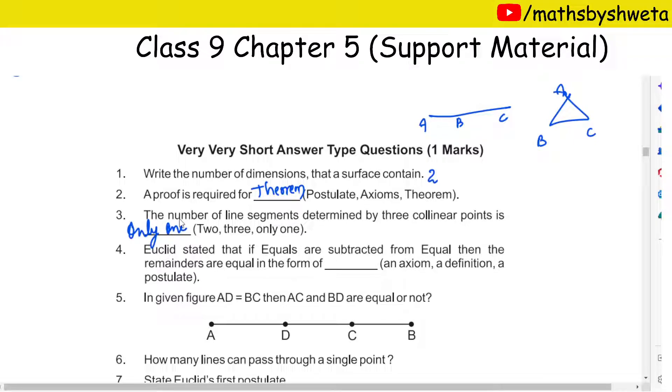Next. Euclid stated that if equals are subtracted from equal, then the remainders are equal in the form of dash - axiom, definition, and postulate. So if you see here, axiom. Euclid's axiom: if you have equal, equal, subtract, then the remainder are equal.